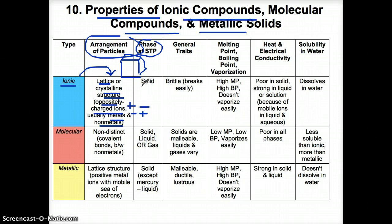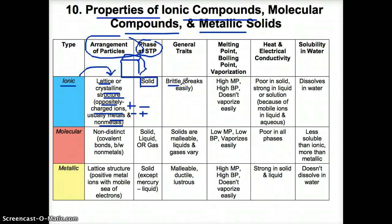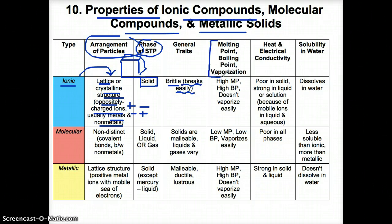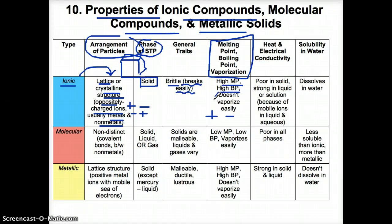The phase at STP for most ionic compounds is solid — for example, salt is an ionic compound that's solid at STP. The general traits of an ionic compound are that all ionic compounds tend to be brittle, or they break very easily — if you were to take salt and crush it in your hands, you could grind it really easily. Because they involve full-on ions with full plus and minus charges, ionic compounds have high melting points, high boiling points, and they don't vaporize easily, because the attraction between ions is very strong and hard to break apart.